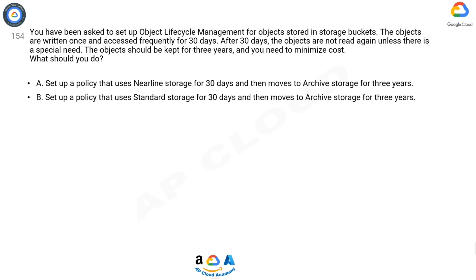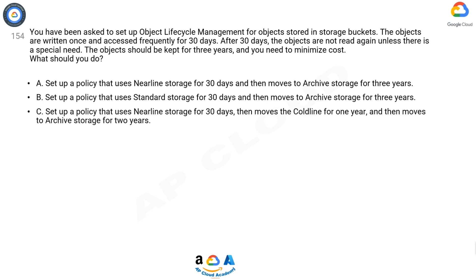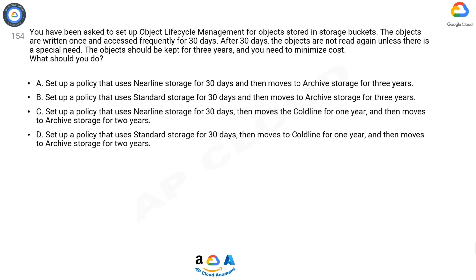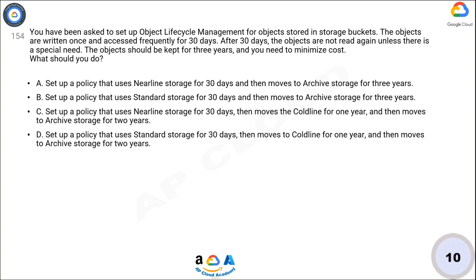Option B: set up a policy that uses standard storage for 30 days and then moves to archive storage for three years. Option C: set up a policy that uses nearline storage for 30 days, then moves to coldline for one year, and then moves to archive storage for two years. Option D: set up a policy that uses standard storage for 30 days, then moves to coldline for one year, and then moves to archive storage for two years. Now take 10 seconds to think about the answer.